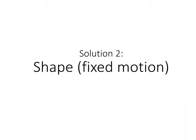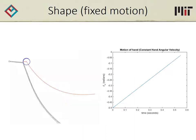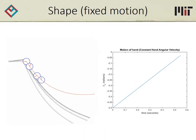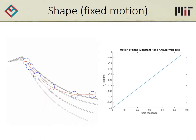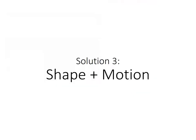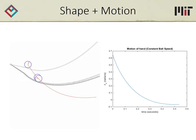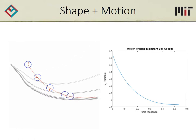Now let's instead search over the space of effector shapes while fixing the motion. We'll set the motion to be a rotation at a constant angular velocity. With our framework, we can also find an effector shape that drives the ball along the same path. Now, let's design both shape and motion simultaneously. Whereas in the previous two examples we could only choose the spatial path of the ball, we now have the extra freedom of choosing how the ball travels along that path. Here is a shape-motion pair that drives the ball at a constant speed along the same curve.